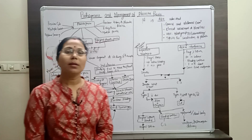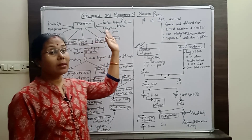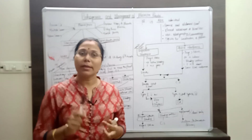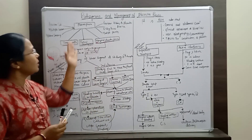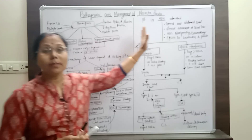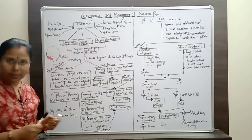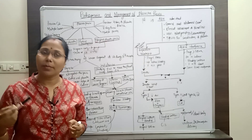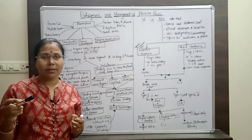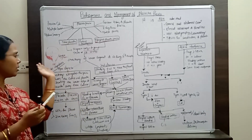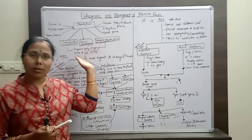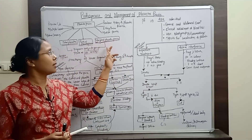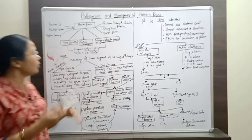Today's topic is the pathogenesis and management of placenta previa. In the last class we already discussed the causes and types of placenta previa. In this video we will learn about pathogenesis and management. Placenta previa is the abnormal placentation where the placenta is implanted in the lower uterine segment. According to position, it is given different names: total placenta previa, partial placenta previa, and marginal placenta previa.